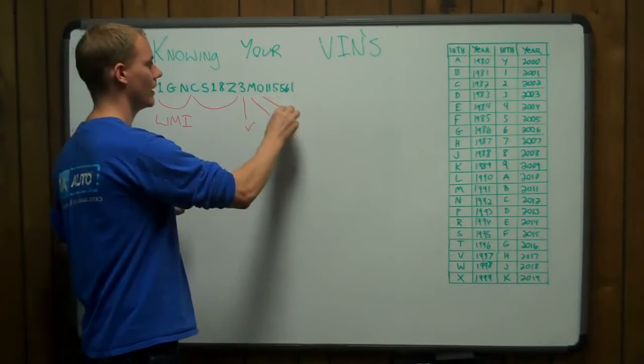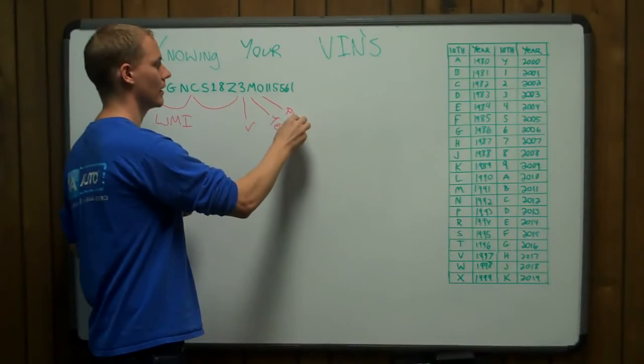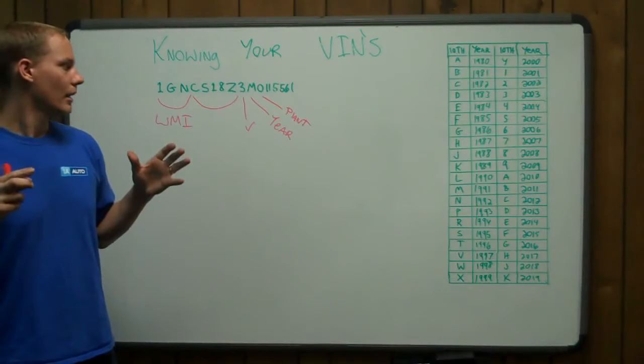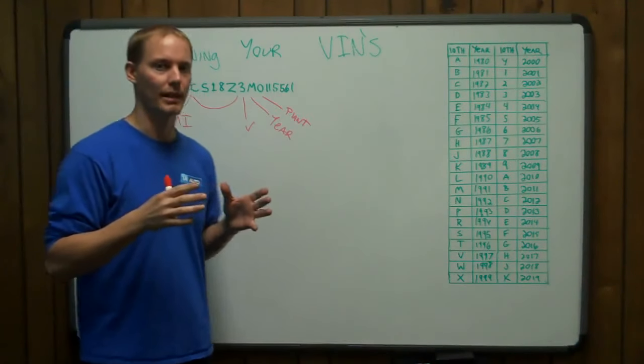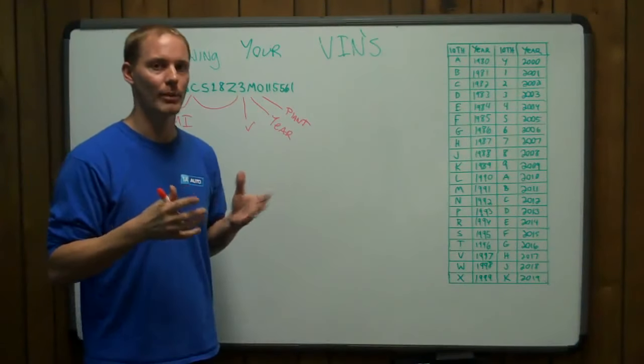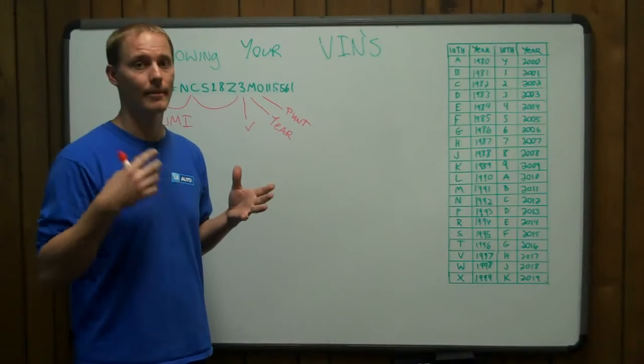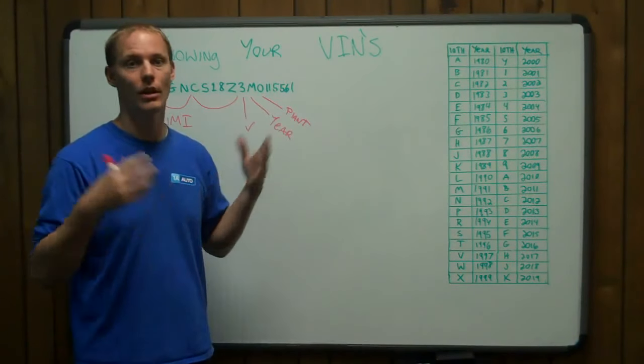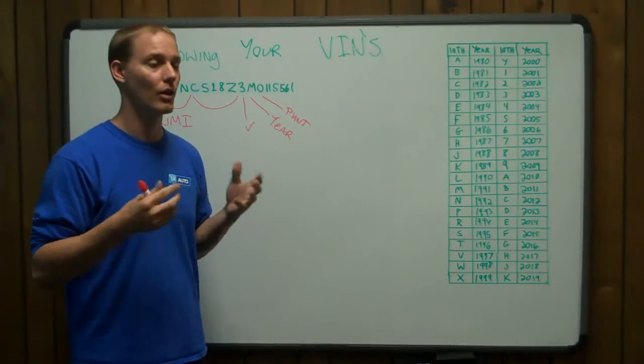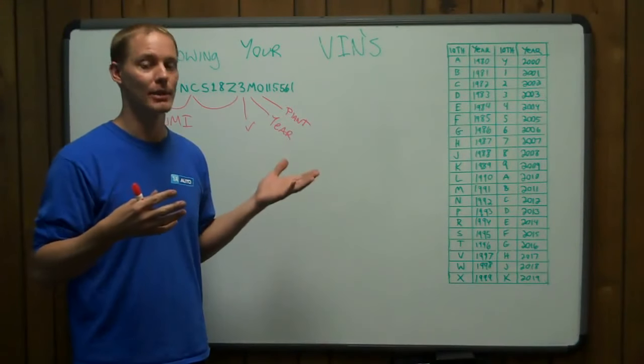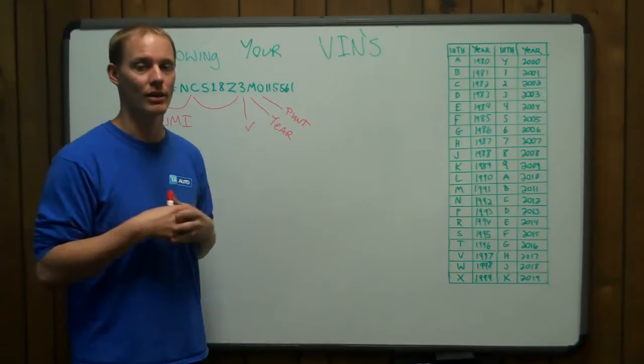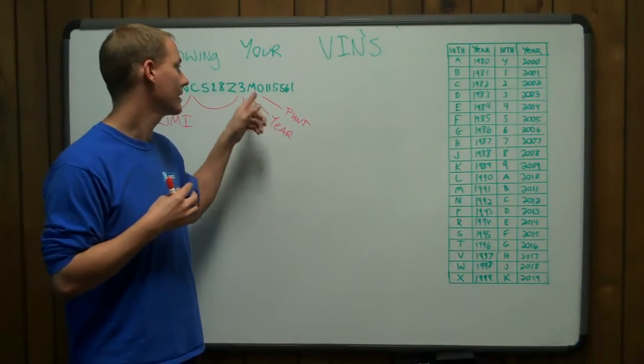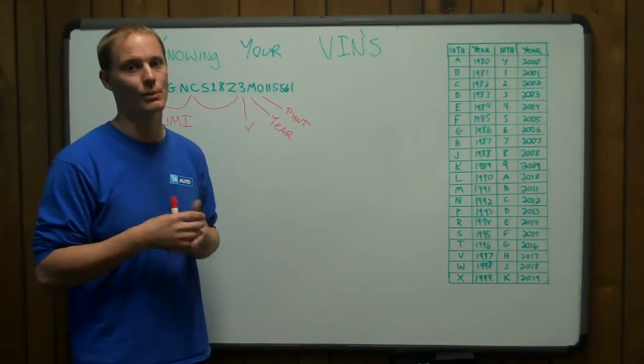The eleventh digit is the plant, and that is where the vehicle is made. So a lot of Corvettes were made in Bowling Green, Kentucky. And this letter will tell you, oh, this was made in Bowling Green, Kentucky. Or maybe they were made in Lansing, Michigan, or maybe Detroit, Michigan, or who knows where, Illinois. It could be made anywhere. And this is the digit that tells you which plant it was made at.